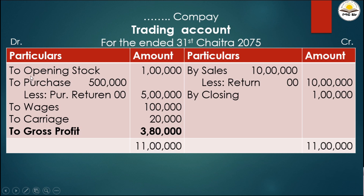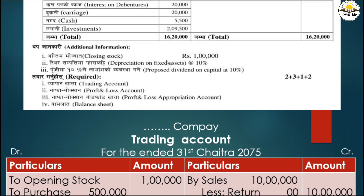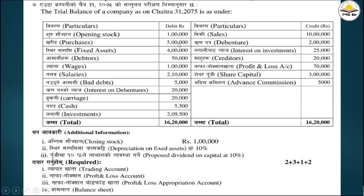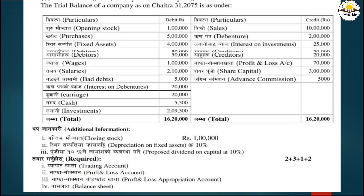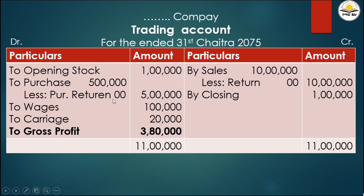Next on the debit side is purchases - from the question, purchases are 5 lakh rupees. If there is a purchase return, it would go on the credit side and be deducted. Since no purchase return is given here, purchases remain at 5 lakh rupees.